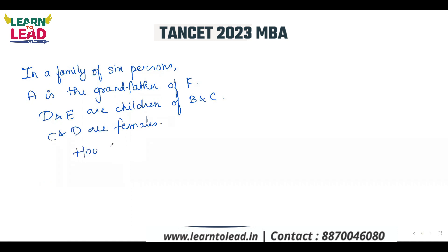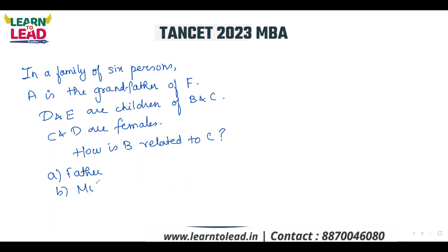C and D are females. How is B related to C? Option A: father. Option B: mother. Option C: husband. Option D: wife. Option E: son.